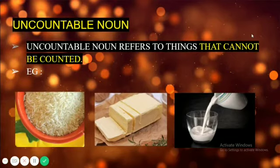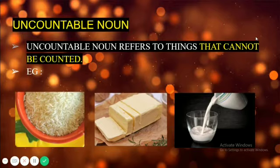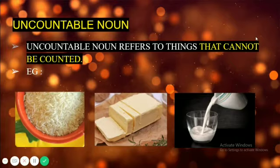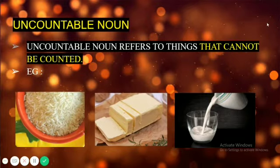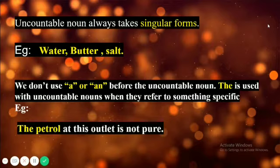Uncountable nouns refer to things that cannot be counted. Uncountable nouns are the names of things which we cannot count using numbers, like rice, butter, milk. We can't count them using numbers. How do we identify uncountable nouns? If we get an answer for the question 'how much,' then the things referred to are uncountable nouns. So if I ask you how much rice is there, you will be able to answer that there is 300 grams of rice or 1 kg of rice. Uncountable nouns always take singular forms — for example, water, butter, salt. We won't say 'waters,' 'butters,' or 'salts.'